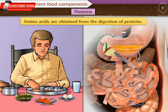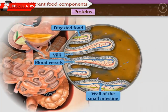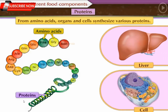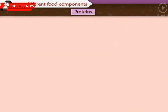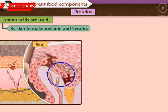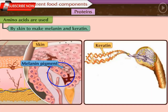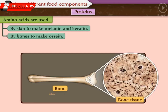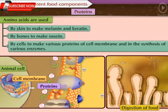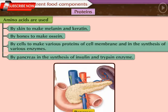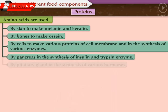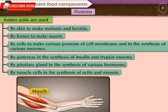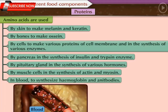Amino acids are obtained from the digestion of proteins and are absorbed into the body and transported to each organ and cell via blood. From these amino acids, organs and cells synthesize various proteins. For example, amino acids are used by skin to make melanin and keratin; by bones to make osin (the collagen component of bone); by cells to make proteins of cell membrane and various enzymes; by the pancreas to synthesize insulin and trypsin; by the pituitary gland to synthesize hormones; by muscle cells to synthesize actin and myosin; and by blood to synthesize hemoglobin and antibodies.